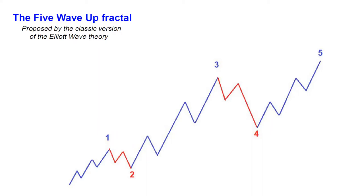This is the 5-wave-up fractal, which was proposed in the 1930s by R.N. Elliott, the founder and father of the classic Elliott wave theory. That fractal is wrong.